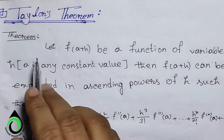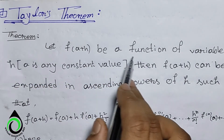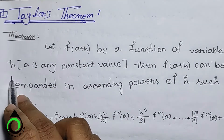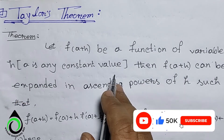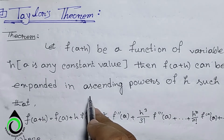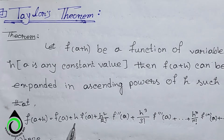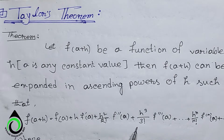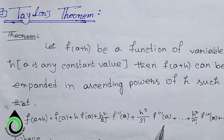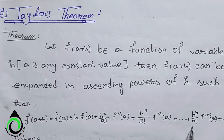What does Taylor's theorem say? The theorem says: let f of (a plus h) be a function of variable h. If a is any constant value, then f(a+h) can be expanded in ascending powers of h such that f(a+h) = f(a) + h·f'(a) + (h²/2!) f''(a) + (h³/3!) f'''(a) + ... + (hⁿ/n!) f⁽ⁿ⁾(a).